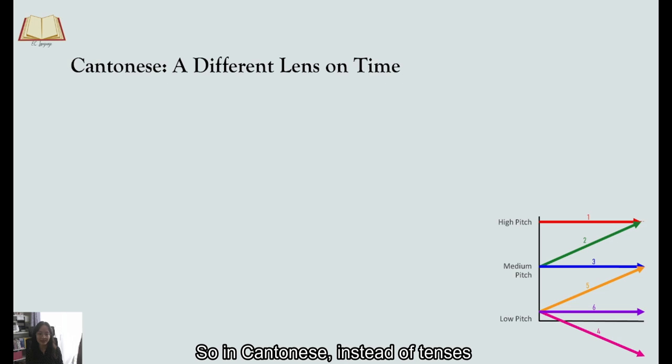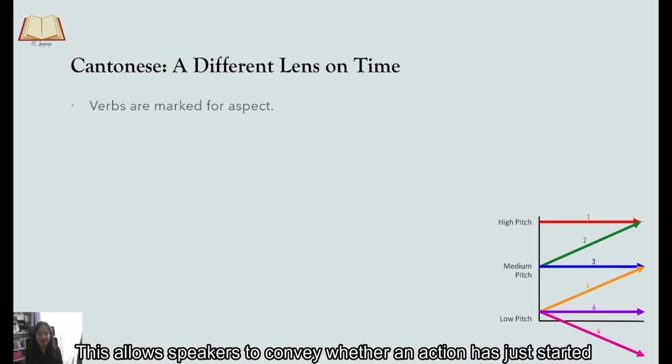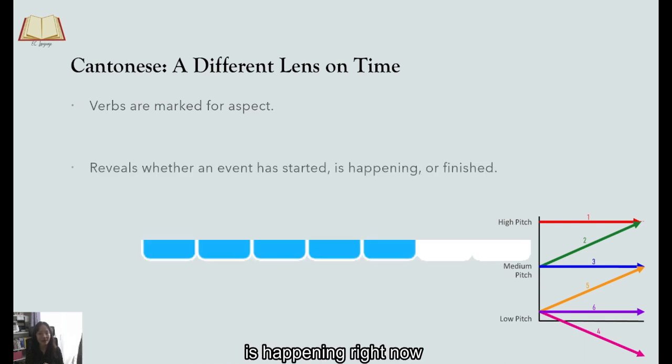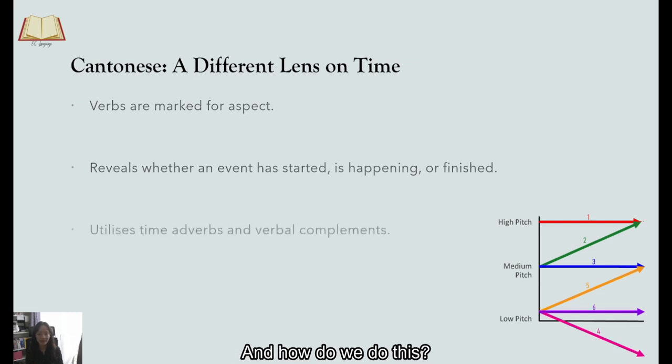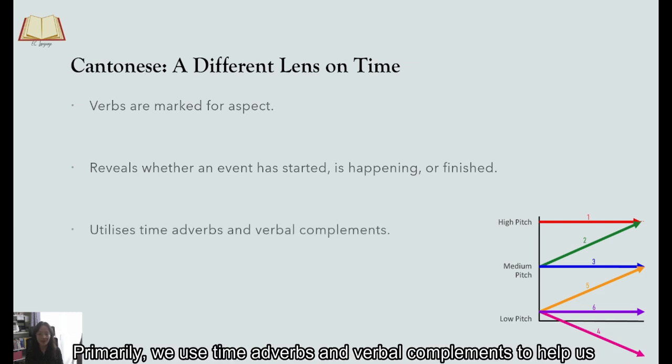So in Cantonese, instead of tenses, verbs in Cantonese are marked for aspect. This allows speakers to convey whether an action has just started, is happening right now or has already been completed. And how do we do this? So primarily, we use time adverbs and also verbal complements to help us.